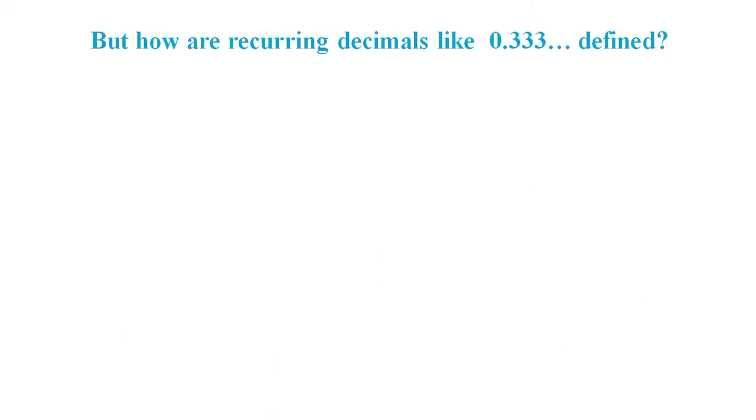We need to appreciate what is usually meant by 0.3 recurring. Meaning 1: A decimal number with infinitely many digits. Notice the expression infinitely many. Meaning 2: